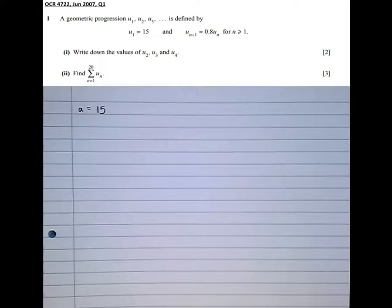It says the next term, u(n+1), is obtained by timesing the previous term by 0.8. That tells us that the common ratio between terms, because that's what makes a geometric sequence, a common ratio between terms, we times by the same number each time to get from one term to the next.